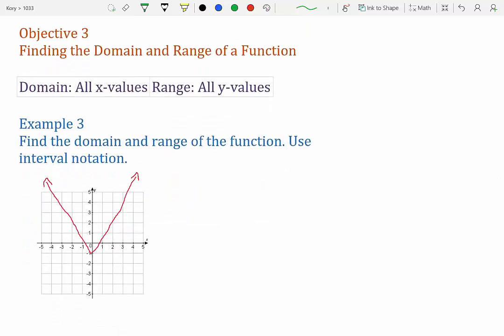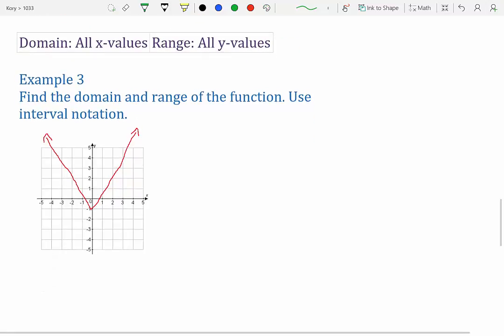Objective 3, find the domain and range of a function. So remember, domain is all your x values, range, all your y values. So for example 3, we want to find the domain and range, and we're going to use interval notation. That was from section 2. That was from chapter 2. So we have domain, our x values, and range, our y values.